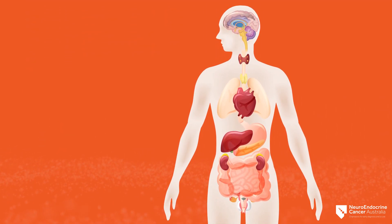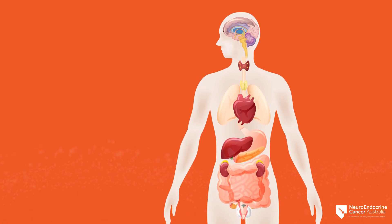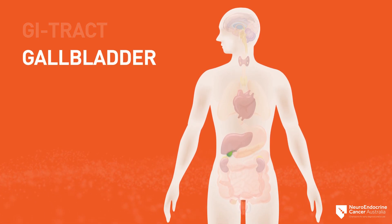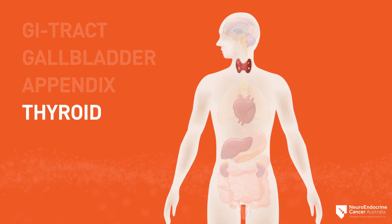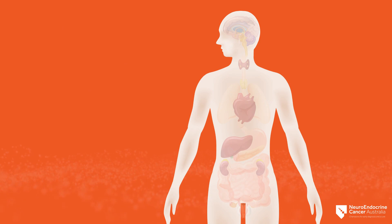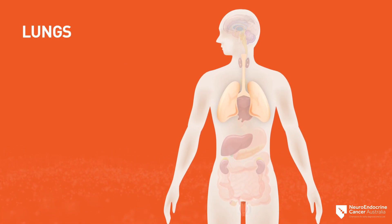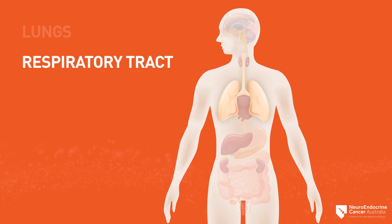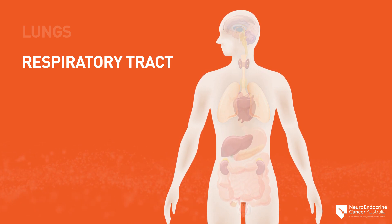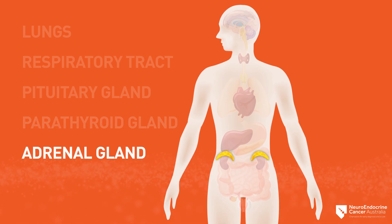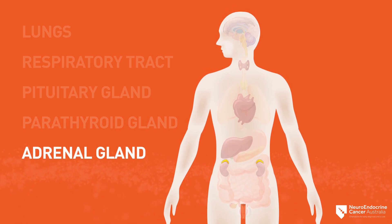Neuroendocrine cells are found in almost every organ of the body, although mainly they are found scattered in the gastrointestinal tract, the gallbladder, the appendix, and the thyroid. They are also commonly found in the lungs or airways into the lungs, as well as the respiratory tract of the head and neck. The pituitary gland, the parathyroid glands, and the inner layer of the adrenal gland are almost all made up of neuroendocrine cells.